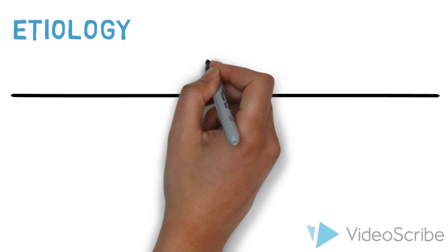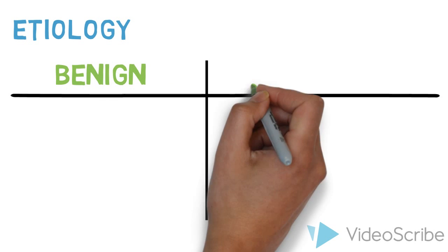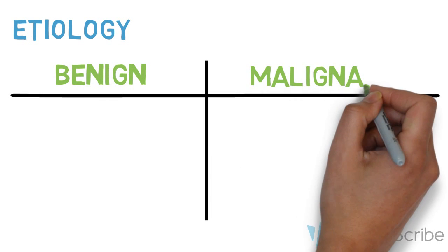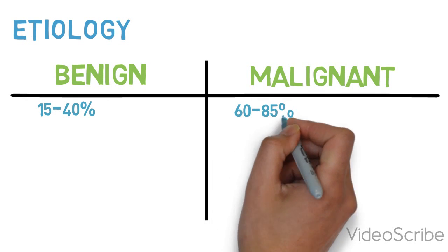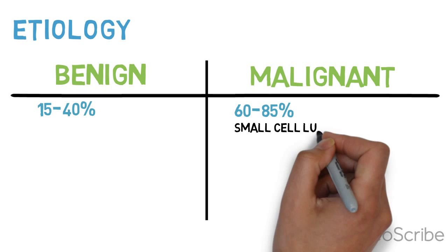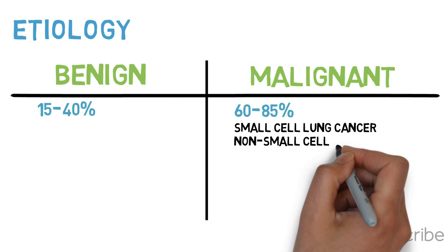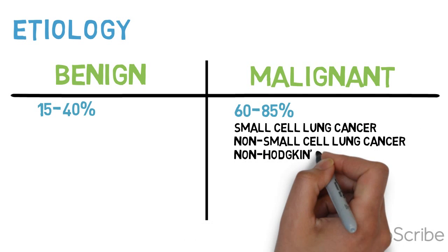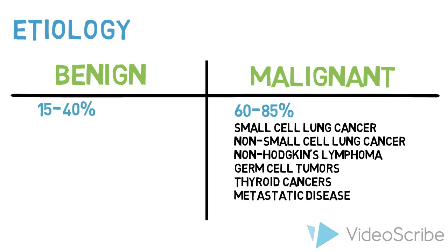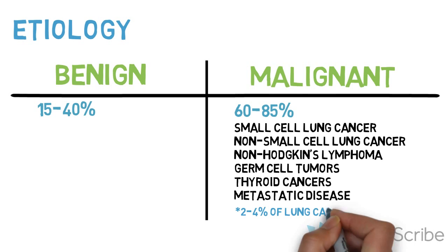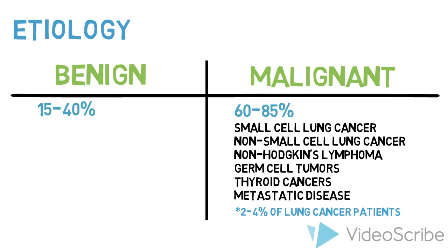Causes of SVC obstruction can be both benign and malignant. Up to 85% of SVC obstructions are due to malignant processes, with the top 3 malignant causes being small cell lung cancer, non-small cell lung cancer, and non-Hodgkin's lymphoma. Other causes include germ cell tumors, thyroid cancers, and metastatic disease. 2-4% of lung cancer patients will develop SVC obstruction at some point, with small cell lung cancer patients at highest risk due to the rapid growth of their disease.